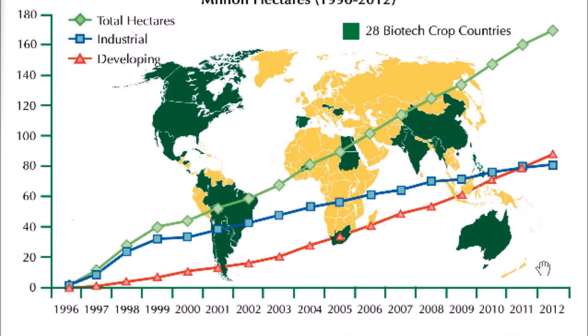In the graphic, states with the largest extension of GMO crops are highlighted in green, while the lines show the total cultivated hectares in green, in blue for industrialized countries, and in red for developing countries.